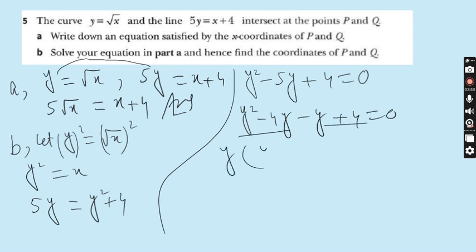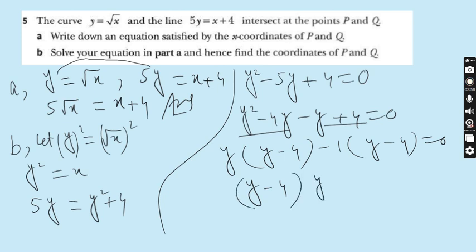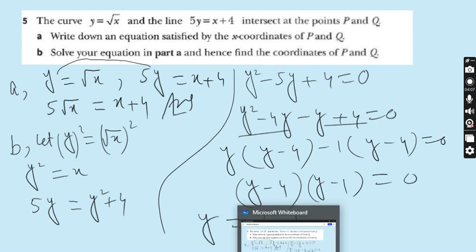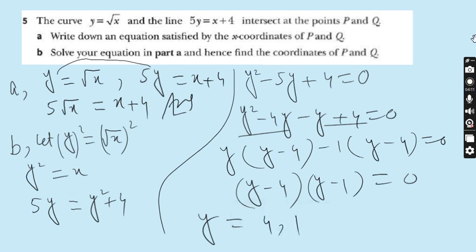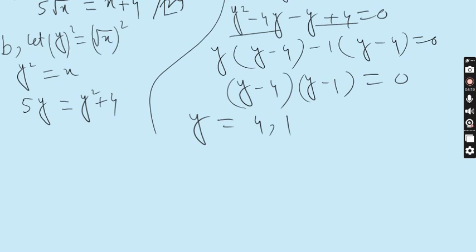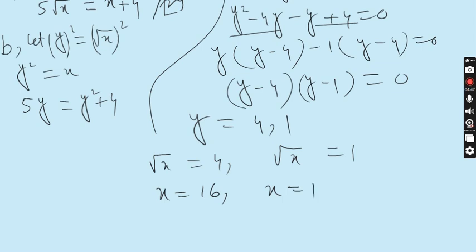Taking y common: y(y - 4) - 1(y - 4) = 0, giving (y - 4)(y - 1) = 0, so y = 4 and y = 1. This is not our final answer because the question is in terms of x. Since y = √x: √x = 4 gives x = 16, and √x = 1 gives x = 1.